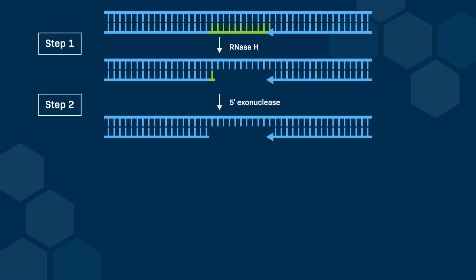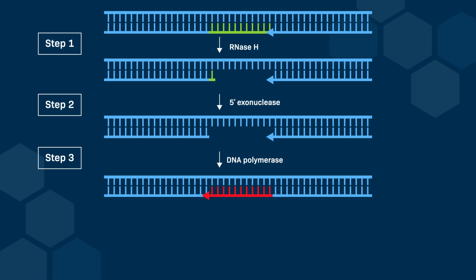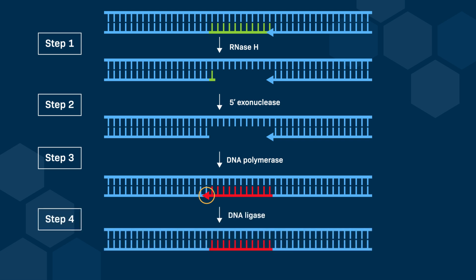The gap left by the excision of the RNA must be filled by elongating the new Okazaki fragment. In bacteria, this elongation is catalyzed by DNA polymerase 1, while in eukaryotes it's performed by DNA polymerase delta. After the gap is filled, there remains a nick, or a small cut, due to the absence of a phosphodiester linkage between the new and pre-existing Okazaki fragments. This small nick is sealed by DNA ligase, which completes the process of DNA replication.